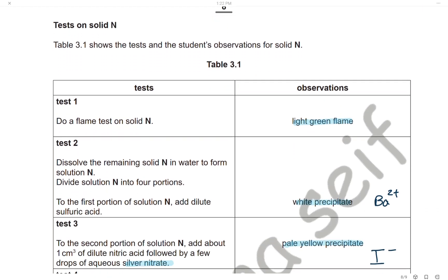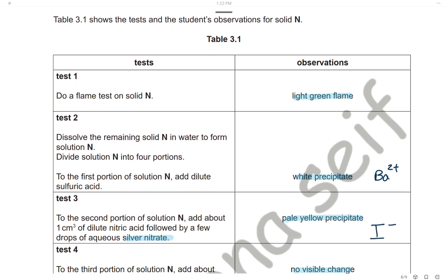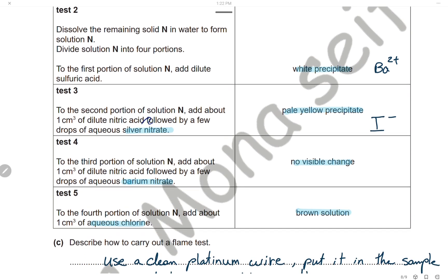Tests on solid N: a flame test gives a light green flame, indicating barium ions. Dissolve solid N in water and divide into four portions. Adding dilute sulfuric acid to the first portion gives a white precipitate — barium sulfate — confirming barium ions. Adding nitric acid followed by drops of silver nitrate to the second portion gives a pale yellow precipitate, indicating silver iodide and therefore iodide ions.